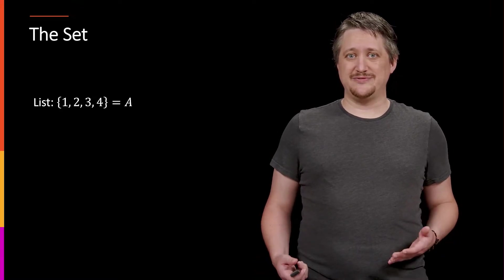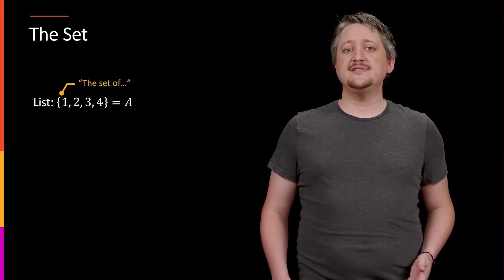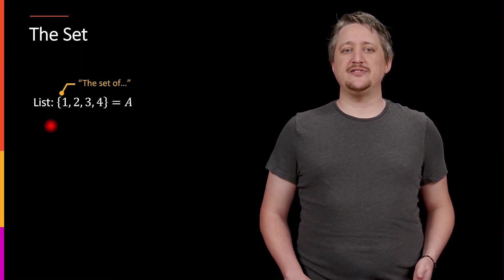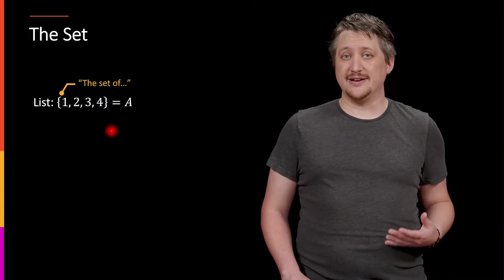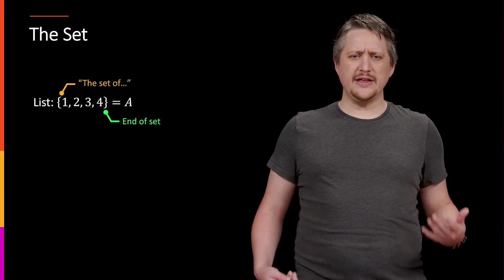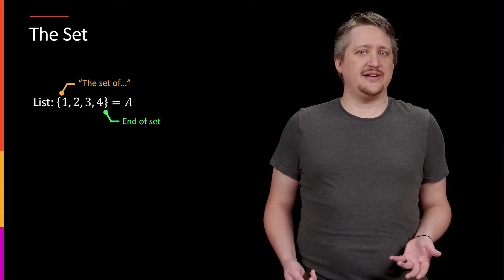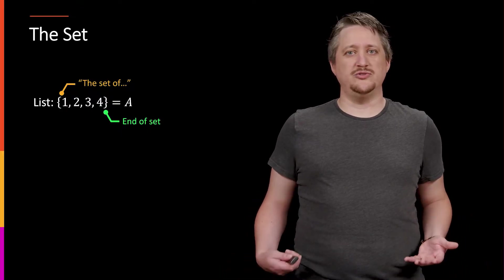But there is some notation here that you might not have seen before. The braces, this leading brace here, tells you that a set is coming. So this is saying the set of, and then you would read the contents because it's a list. So the set of one, two, three, four.